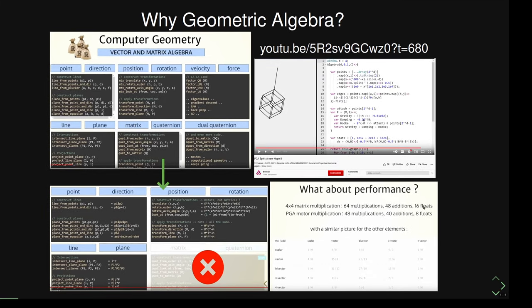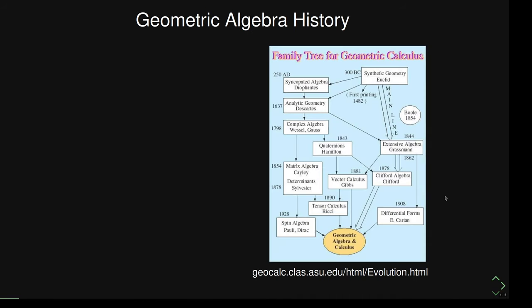In the bottom right there's another picture showing performance. The usual way you do computer graphics is with four-by-four matrices, but if you use PGA motors instead — geometric algebra — they require fewer multiplications and additions. So not only is it more elegant, but it's also more efficient, and you don't need to do any conversions.